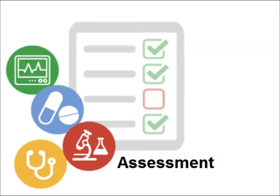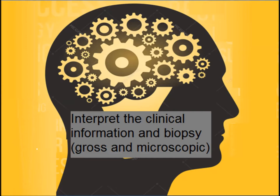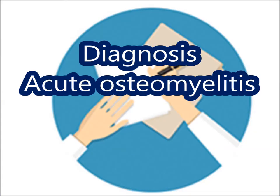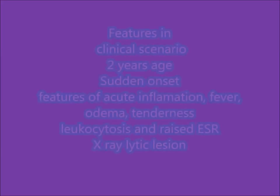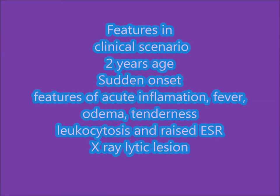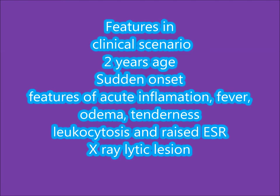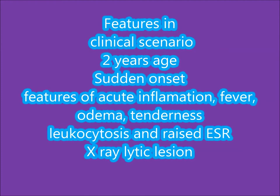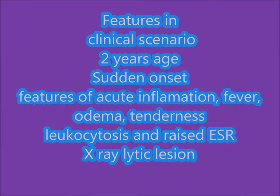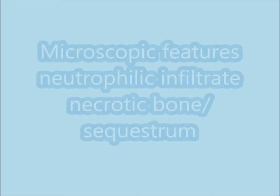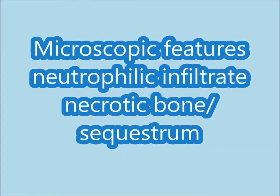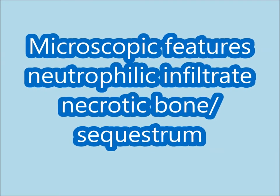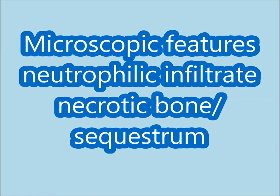Now the assessment: while we interpret the case, we take into account the clinical scenario and the photograph — biopsy gross or microscopic. The diagnosis is acute osteomyelitis. Features supporting this diagnosis are: 2 years of age, sudden onset, features of acute inflammation including fever, edema, and tenderness, leukocytosis, raised ESR, and X-ray showing a lytic lesion. Microscopic features include neutrophilic infiltrate and necrotic bone, also called sequestrum, which is dead bone.